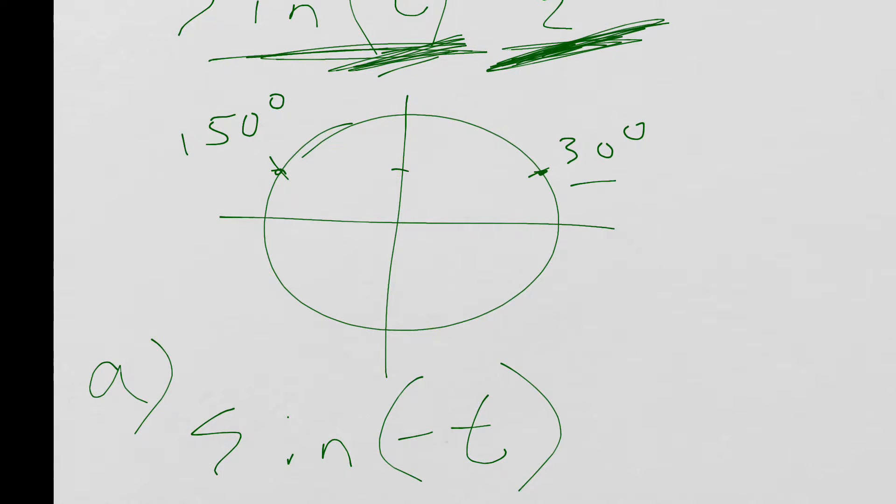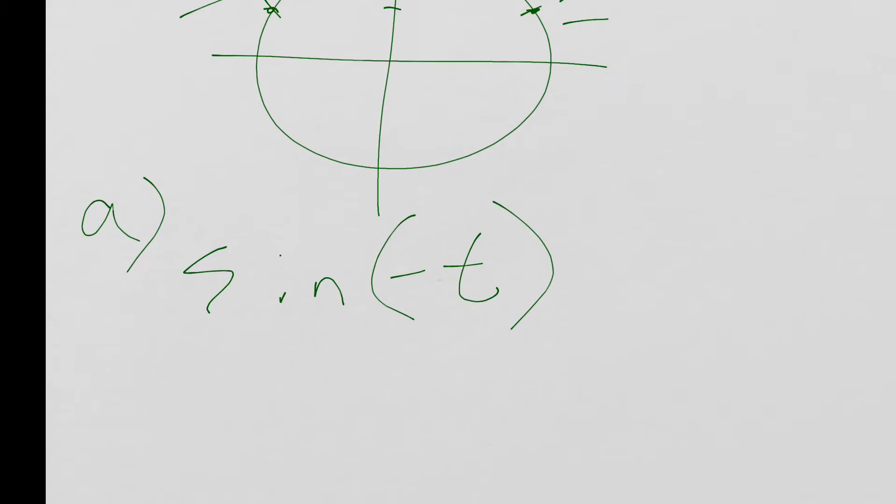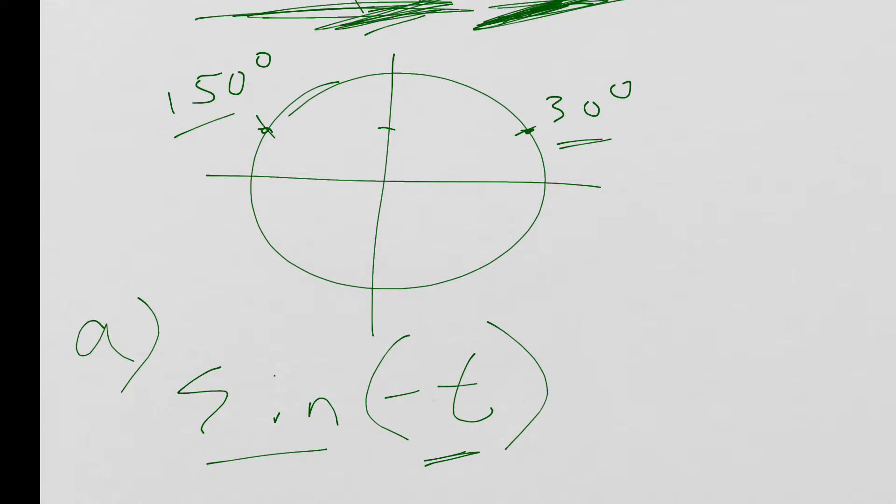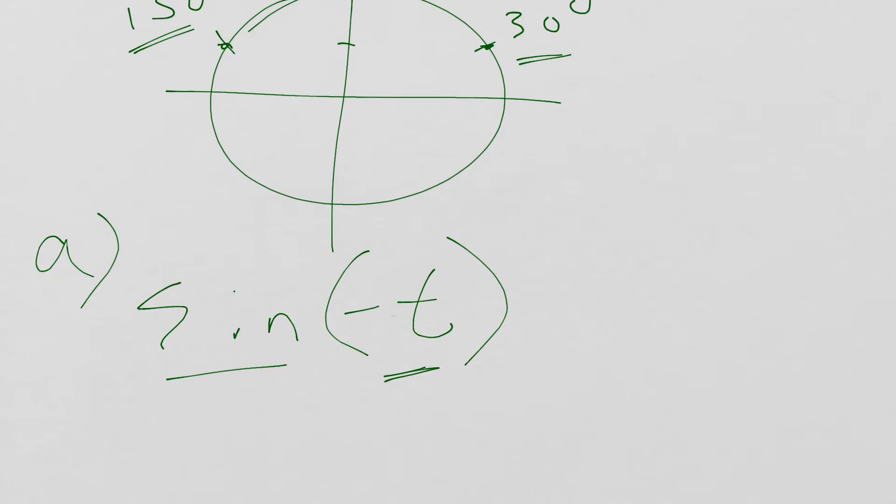Alright. Again, we don't know if it's 30 or 150, but now it's saying, what would happen to the sine value if you went in the opposite direction, these same angles?